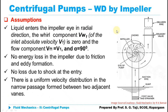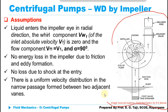Before proceeding to the assumptions, let's revise what we discussed previously. We discussed how the centrifugal pump works — it is basically working on the principle of forced vortex flow, where mechanical energy is supplied to the impeller through the shaft to which it is coupled. The center where the shaft is located is also known as the eye of the impeller.